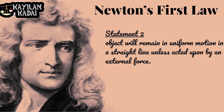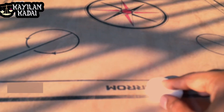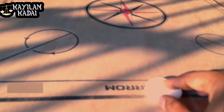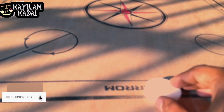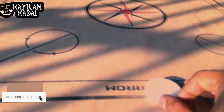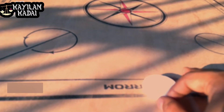If an object will remain at rest unless acted upon by an external force — this striker is at rest. If we apply an external force, the striker will change its state. The rest will change to uniform motion in a straight line.